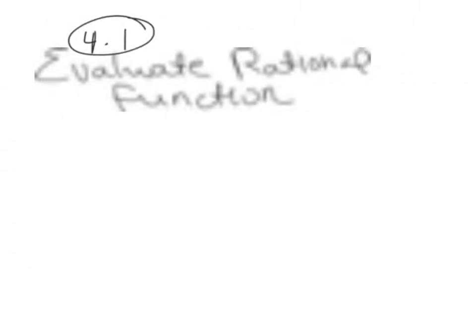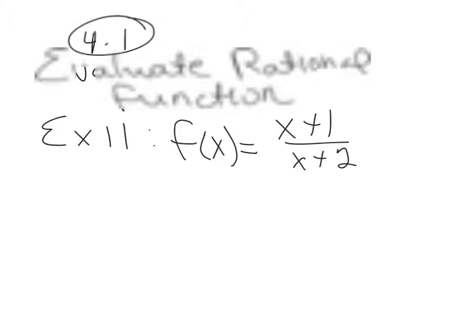We are finishing up section 4.1 in intermediate algebra. Example 11 starts with evaluate rational functions. Example 11 has this function f(x) equals (x+1) over (x+2), and then there are directions to find f of 0.